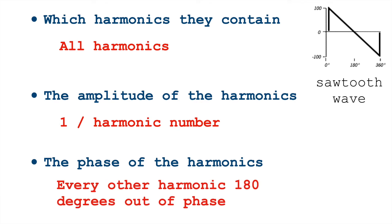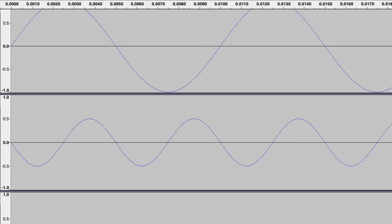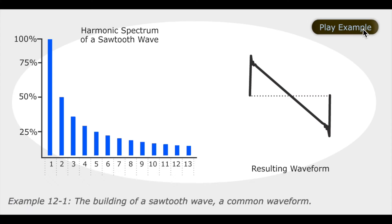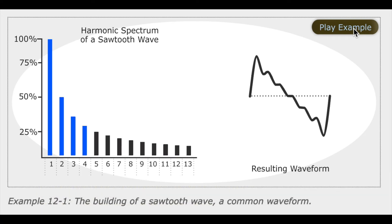Also in the sawtooth wave, every other harmonic is 180 degrees out of phase. So that means if your fundamental starts by moving towards high pressure, your second harmonic is going to start by moving towards low pressure. Third high, fourth low, and so forth. We take all of these frequencies, all of these sine waves, and add them together at this combination, and we get the shape of a sawtooth wave.